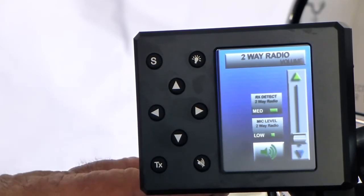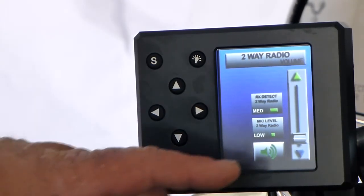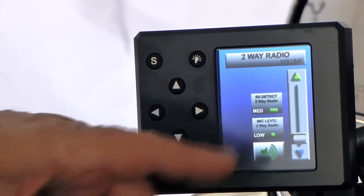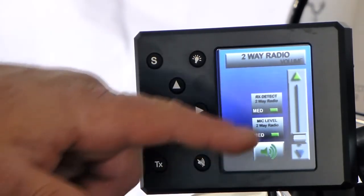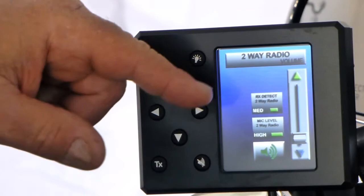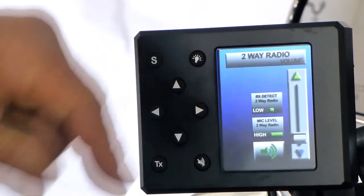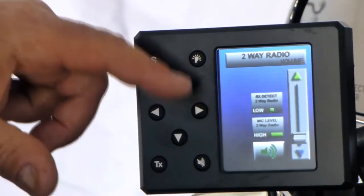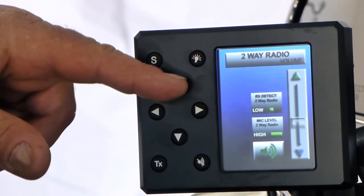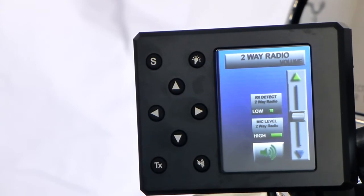For a typical Goldwing we set up the mic level. We have low, medium, and high. We set the mic level to high. We set the receive-detect to its lowest position. And we'll set the volume for this in approximately the middle. This is the starting position.